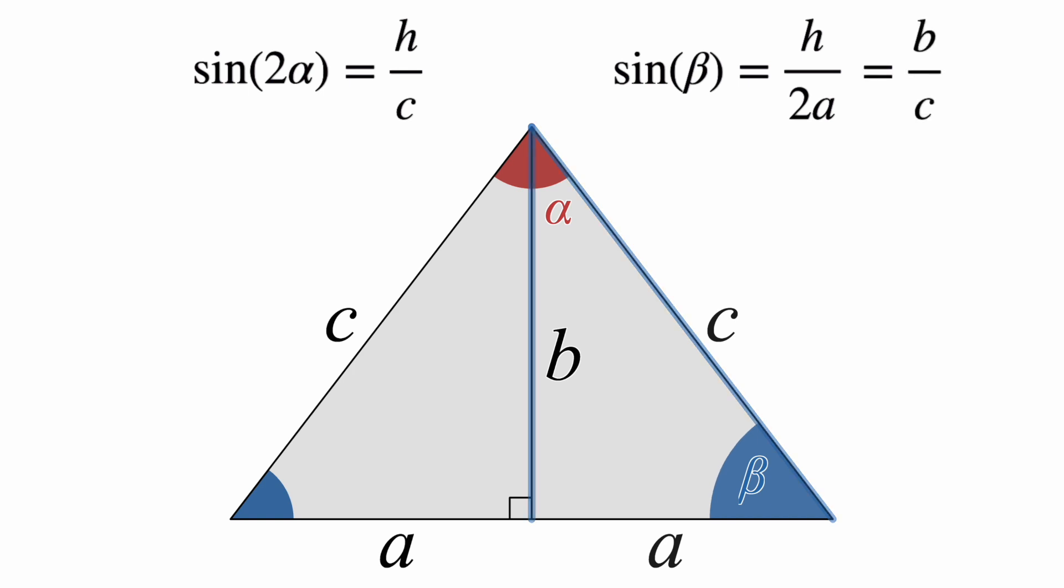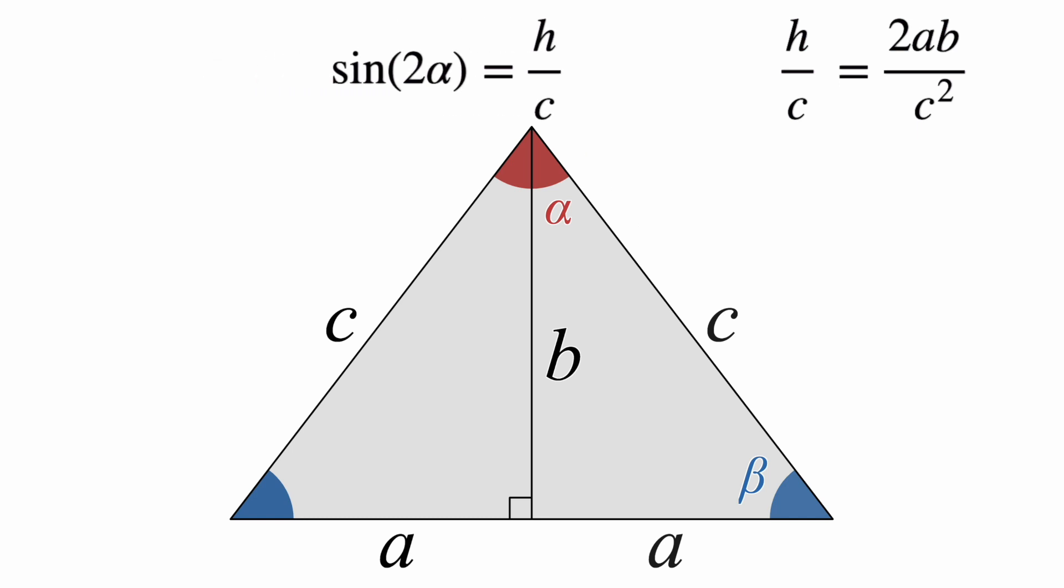Okay. Now, if we multiply both sides of this sine beta equation by 2a and then divide by c, we can see that the sine of 2 alpha equals 2ab over c squared. How cool is that?